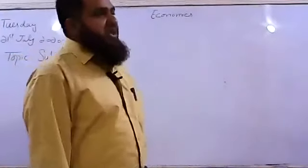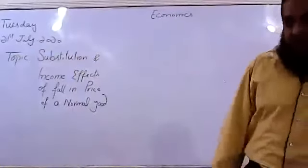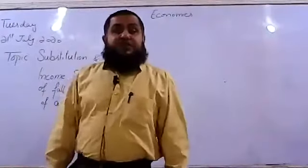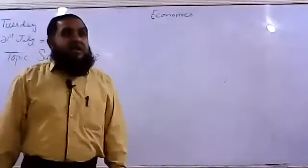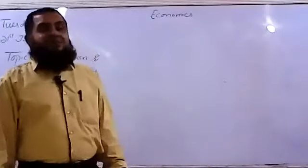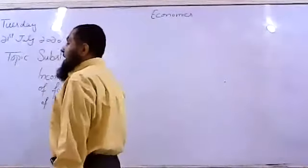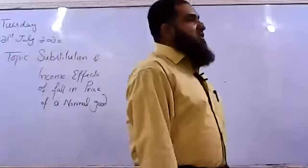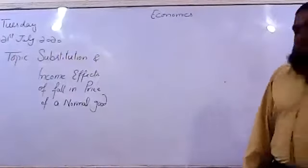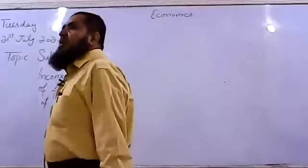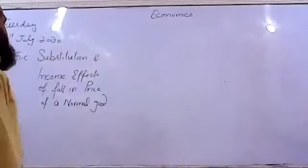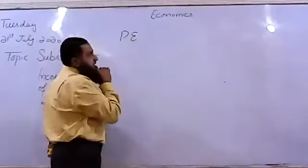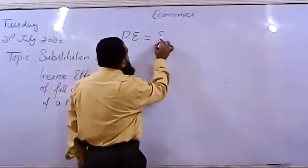When price decreases, the consumer will increase the consumption of that commodity. A normal good has a positive relationship with income: when consumer income increases, demand for the normal good increases. The normal good also has a downward sloping demand curve — when its price goes down the consumer buys more. This falling price has two effects: one is called the substitution effect and another is called the income effect.